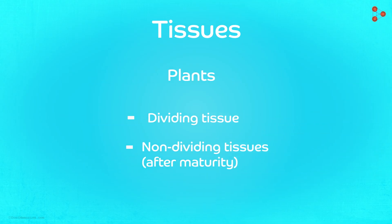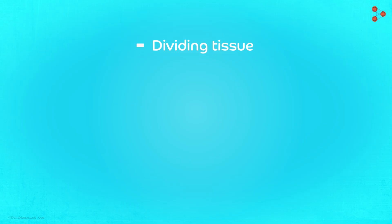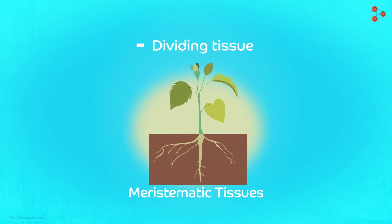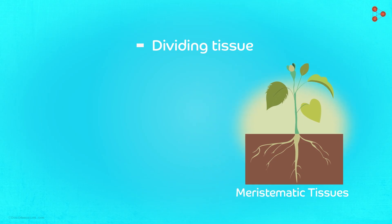Beginning with plant tissues first, we classify them based on their dividing and non-dividing nature. The ones that constantly divide throughout the life of plants are called the meristematic tissues. These help in the growth of plants in various ways. Depending upon the location, we classify meristematic tissues as apical meristem, lateral meristem and intercalary meristem.